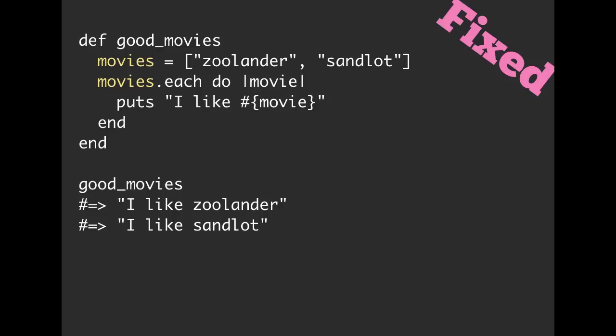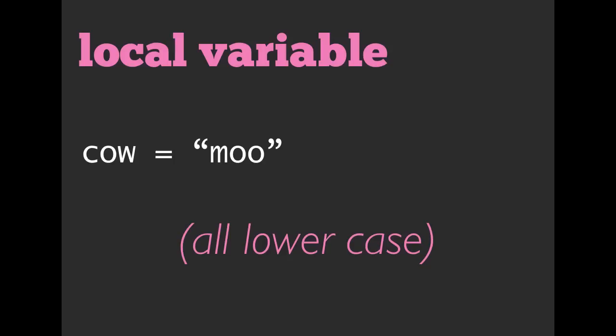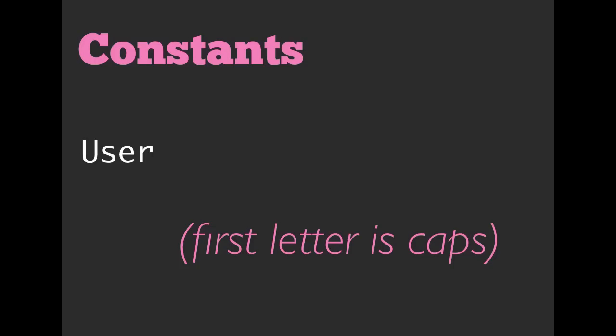But I said we're going to talk about scope and we haven't really. We have different types of variables with different types of scope. We have been using two of them already. We've been using local variables. So in this example, cow is our variable. It is a local variable because it is all lowercase. And it is equal to the string of moo. We also have constants. We haven't actually put a name to them before. A constant, the first letter is going to be capitalized.